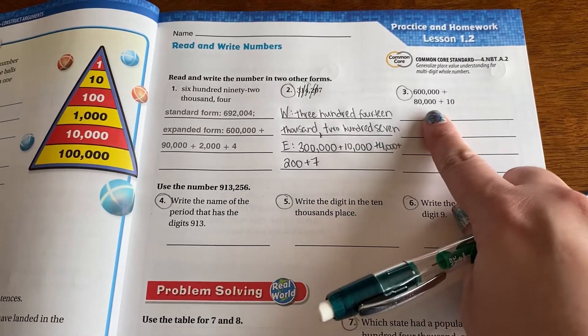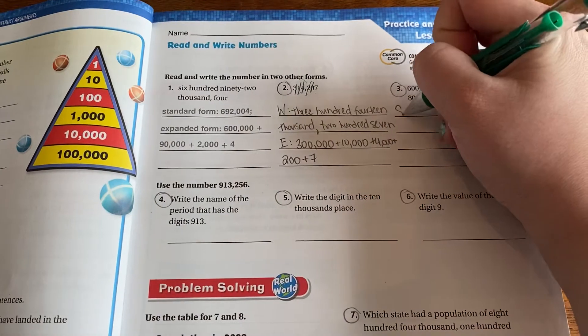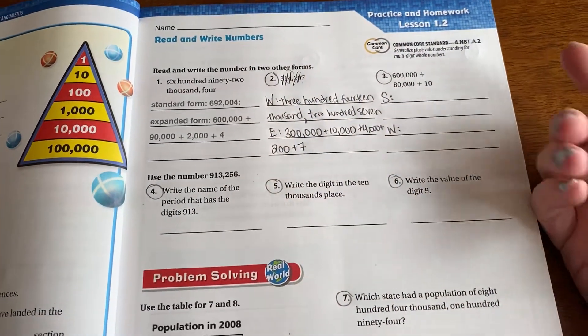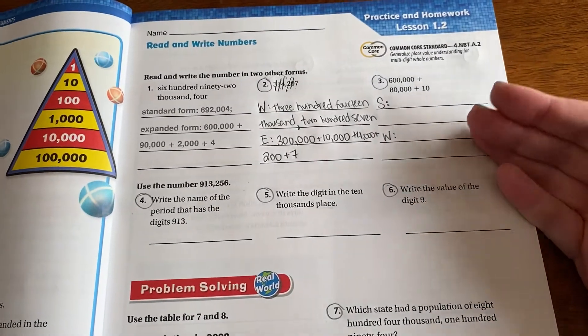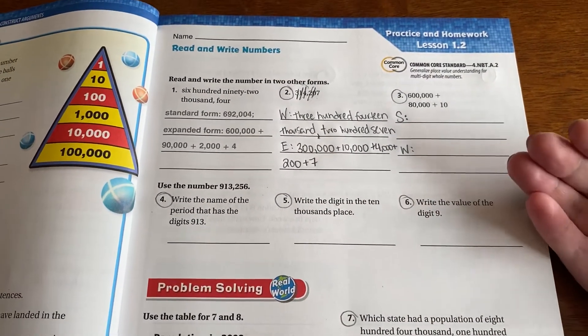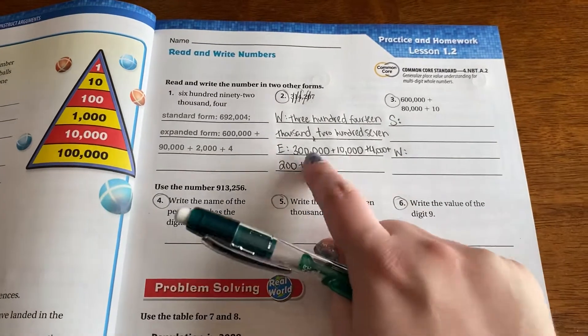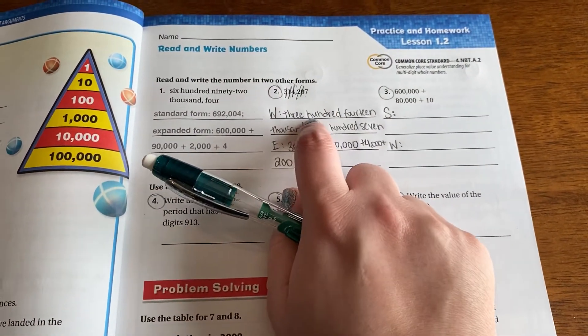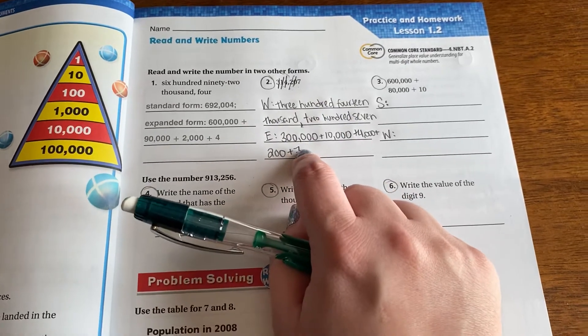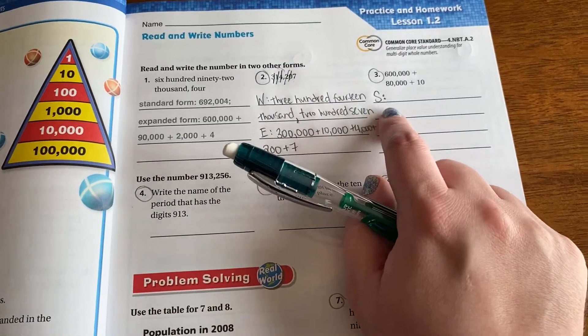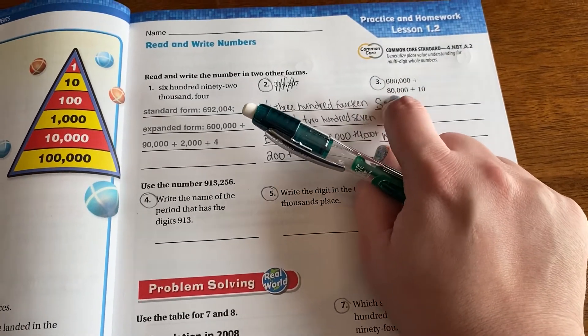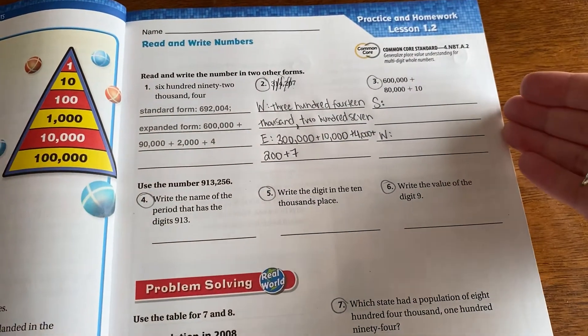But number 3 gives it to me in expanded form, which means I need to go to standard form and word form. I always like to, if it gives me something other than standard form, I always like to go back to standard form first because I think it's easier to go to the other forms from standard. You might think it differently. That's fine, too. For me, that's the easiest way to do it. So I'm going to start with the standard form.